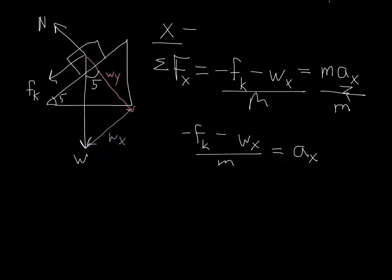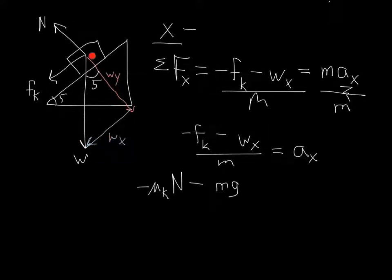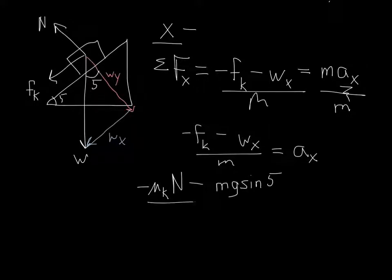I can plug in the equations. The force of kinetic friction is mu_k times the normal force. Wx, the weight component parallel to the incline, is m times g times sine of 5 — because Wx is opposite to the 5-degree angle in our triangle. So the equation becomes: a_x equals negative mu_k times N minus m times g times sine of 5, all divided by m.